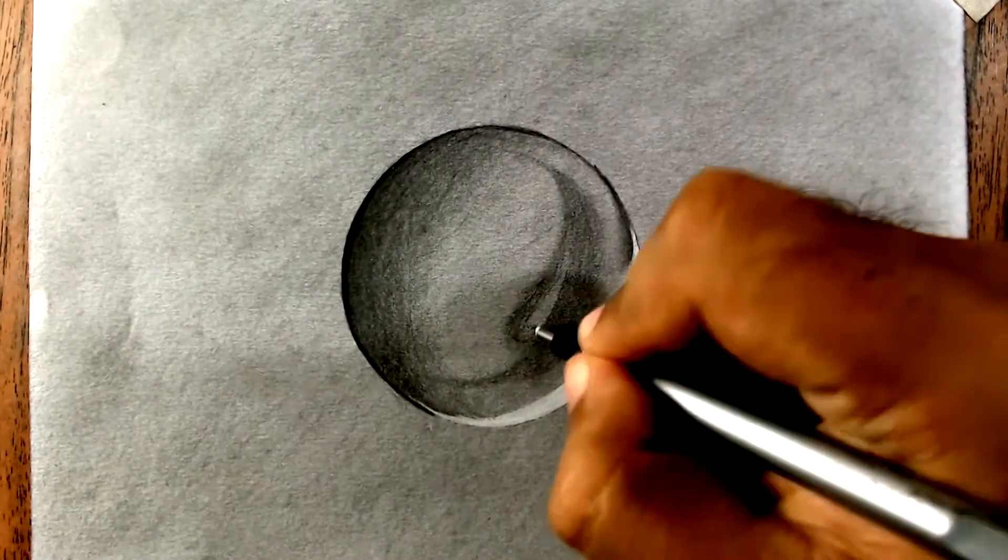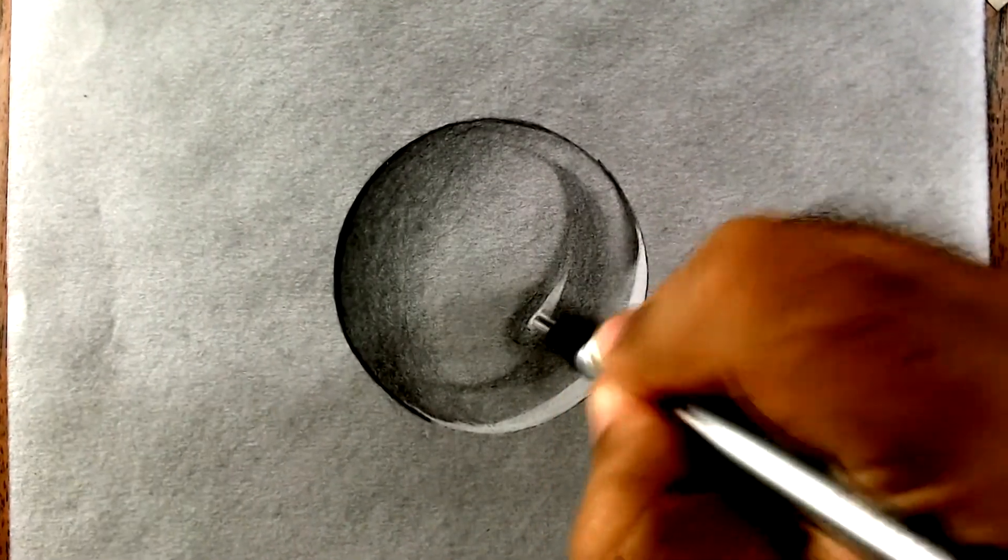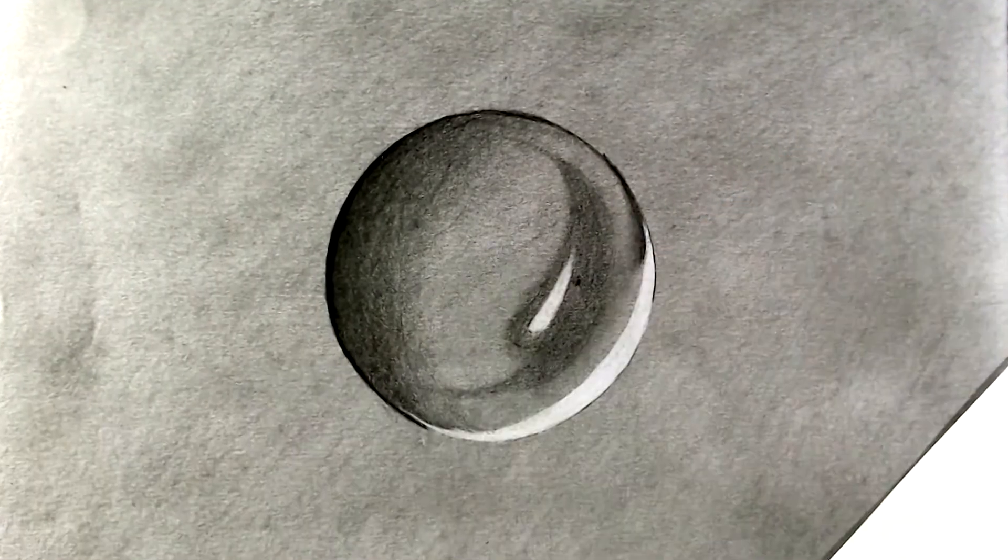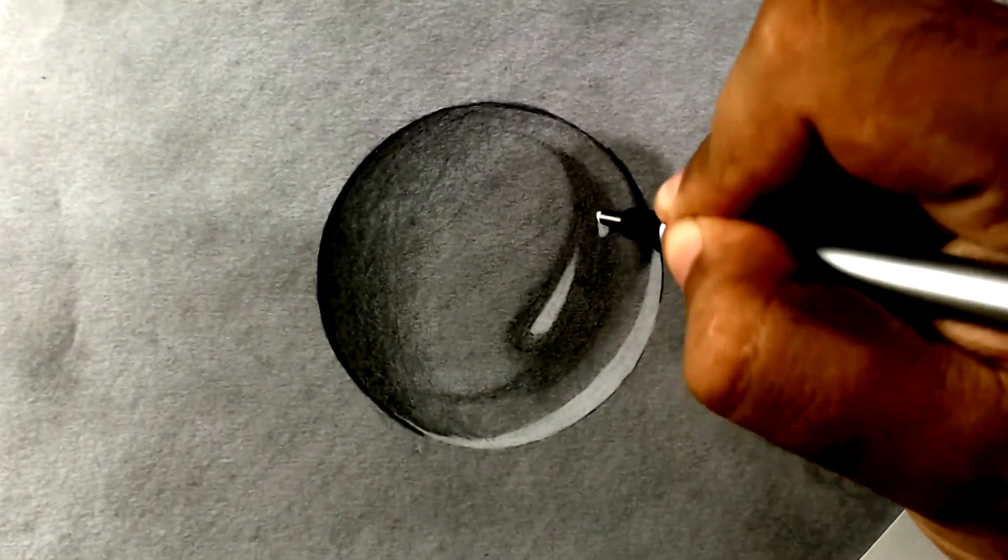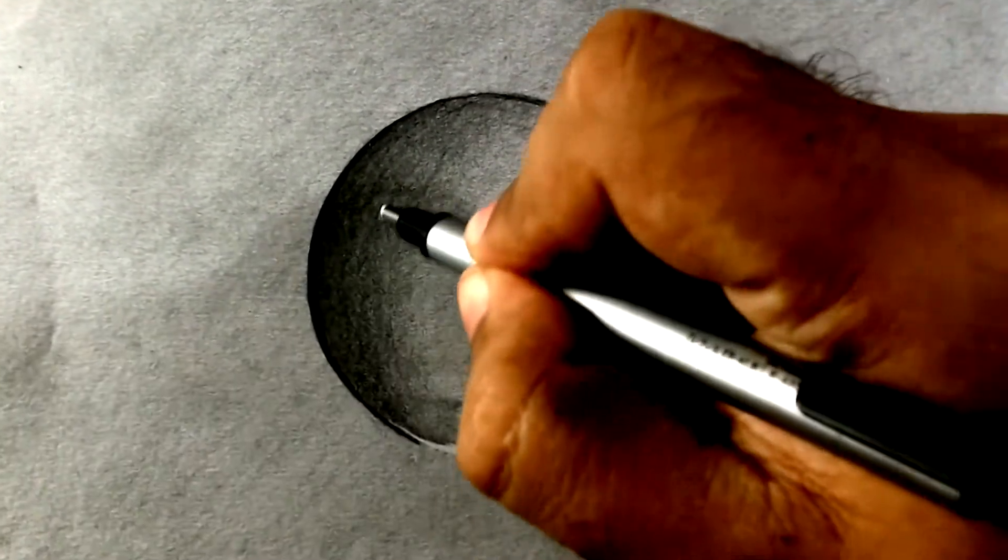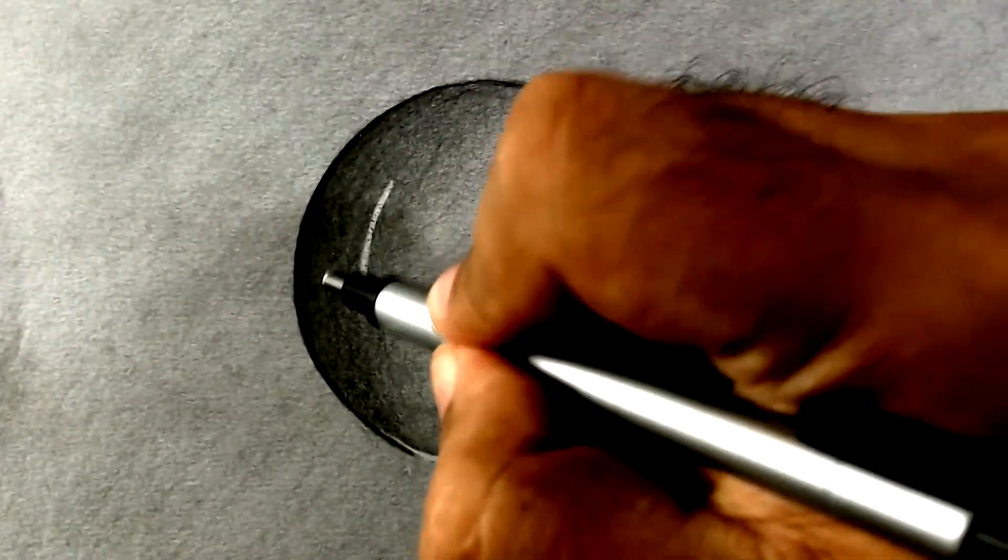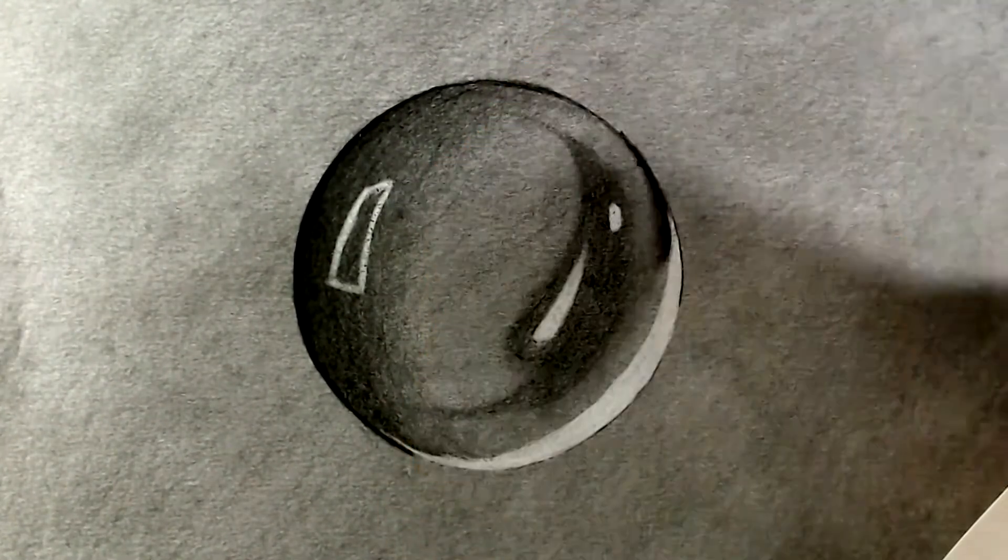And back with the pen eraser, let's create all the brightest areas that we have on that crystal ball. The highlights are what is going to create the crystal effect, so you have to draw this in the right place and mainly so bright and white.